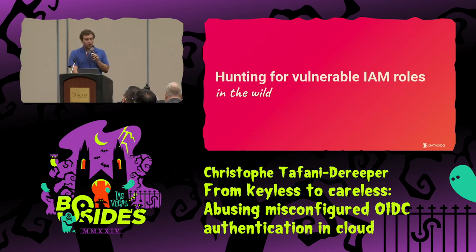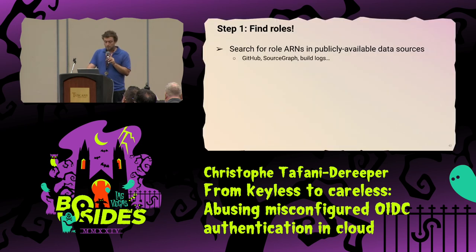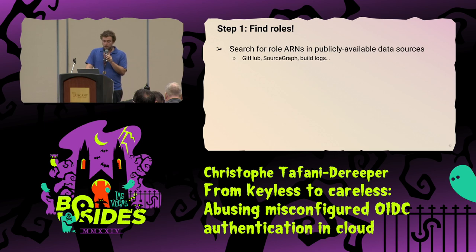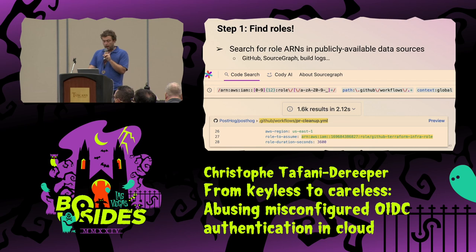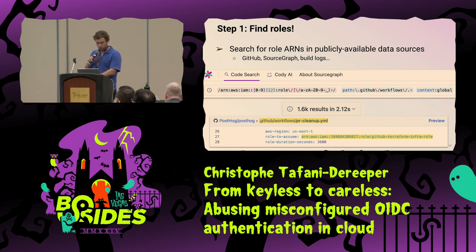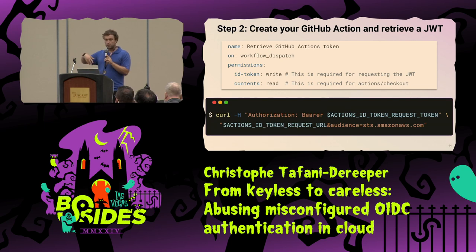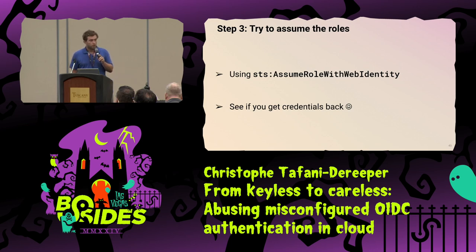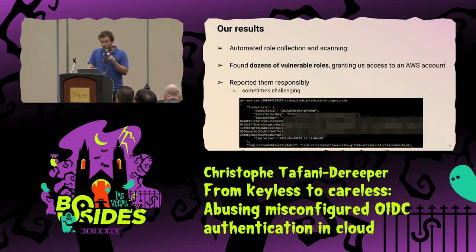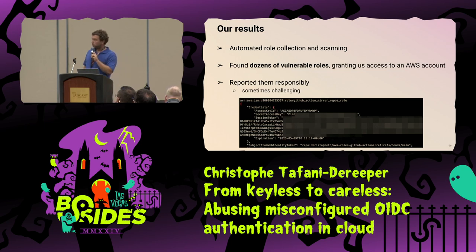That's the theoretical misconfiguration. How do we prove it's actually an issue? First, we need the role ARNs — the Amazon Resource Names, which are just the role name and account ID. We can use GitHub search or services like Sourcegraph. With a regex and the path, it gives us 1.6k results — a few duplicates, but still a few hundred. As a second step, you create your own GitHub Action in a private repo, run the kernel to get back the JSON web token, extract it, and loop through all these roles calling STS AssumeRoleWithWebIdentity. We automated this and ran it for a few hundred roles, finding quite a lot that were vulnerable and returned AWS credentials.